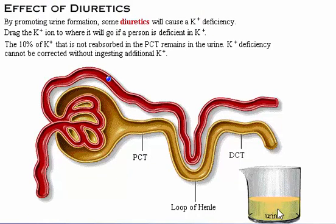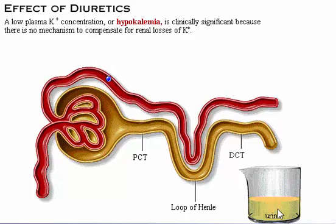The 10% of potassium ion that is not reabsorbed in the PCT remains in the urine. Potassium deficiency cannot be corrected without ingesting additional potassium. One reason why a low plasma potassium concentration, or hypokalemia, is clinically significant is because there is no mechanism to compensate for renal losses of potassium.